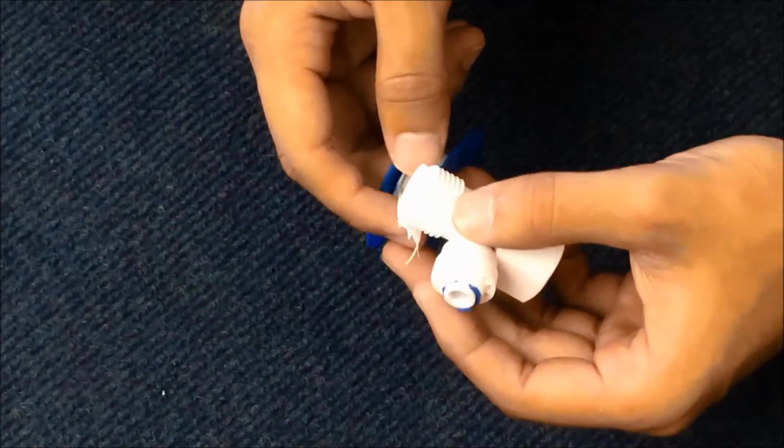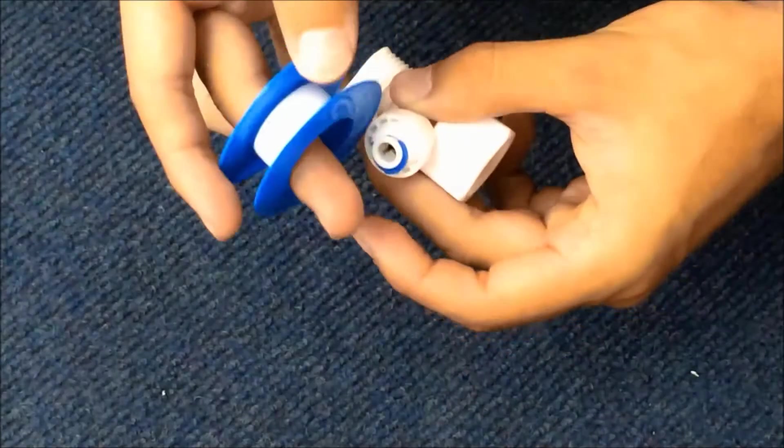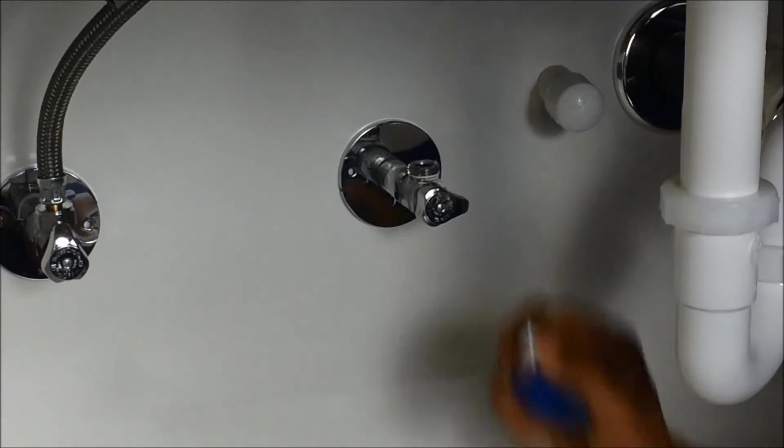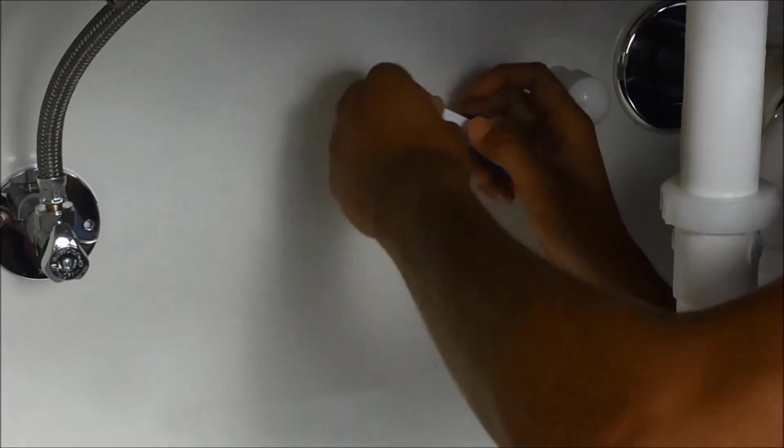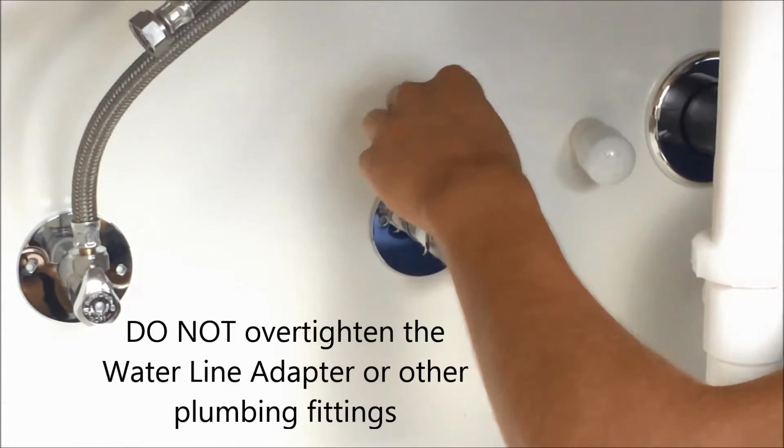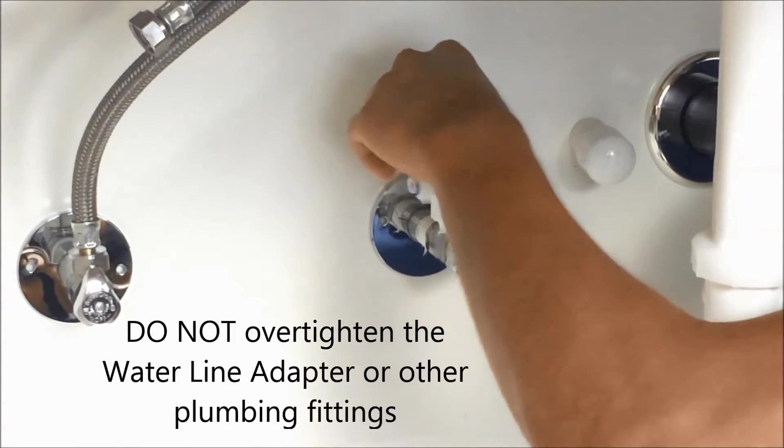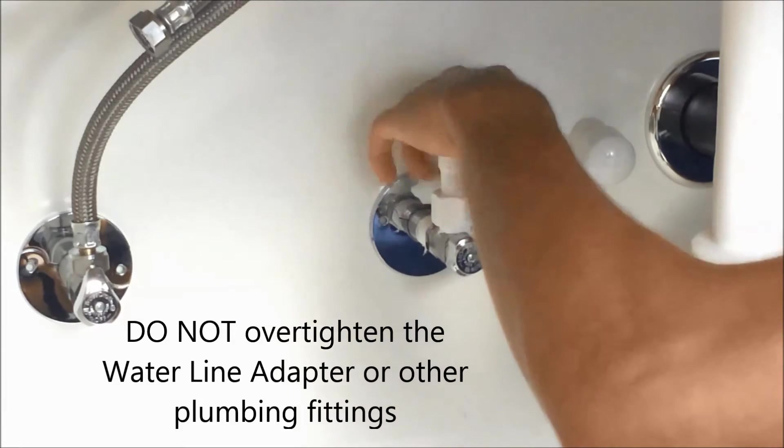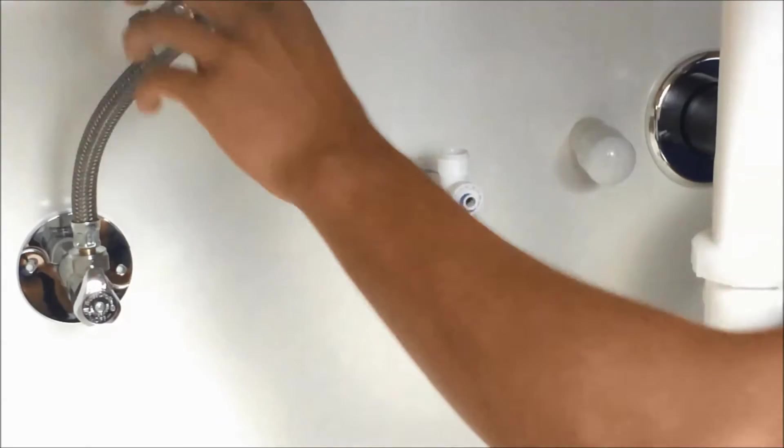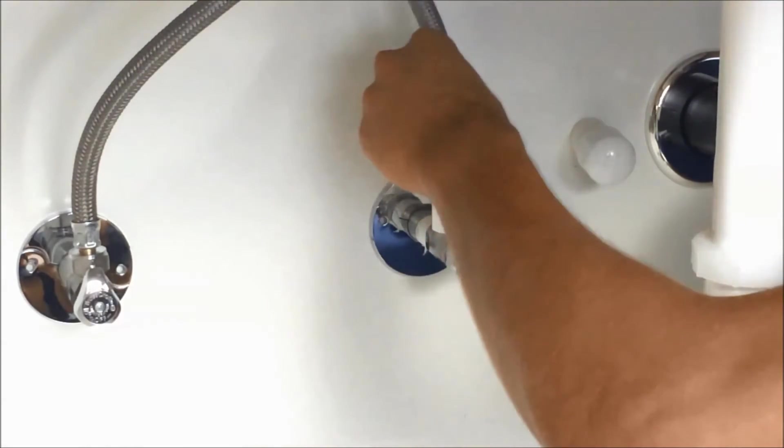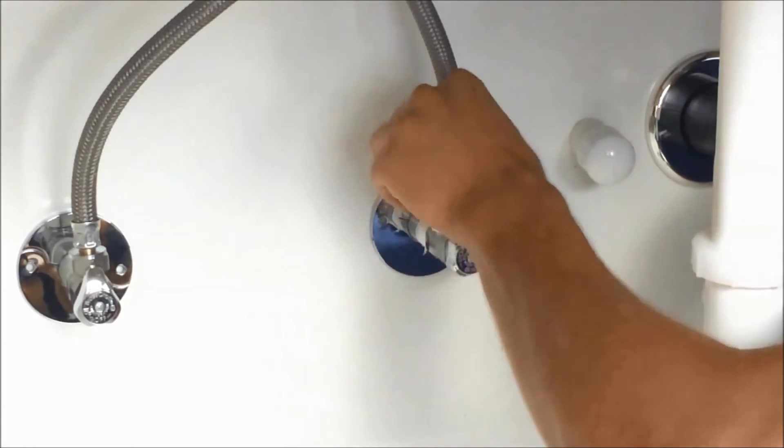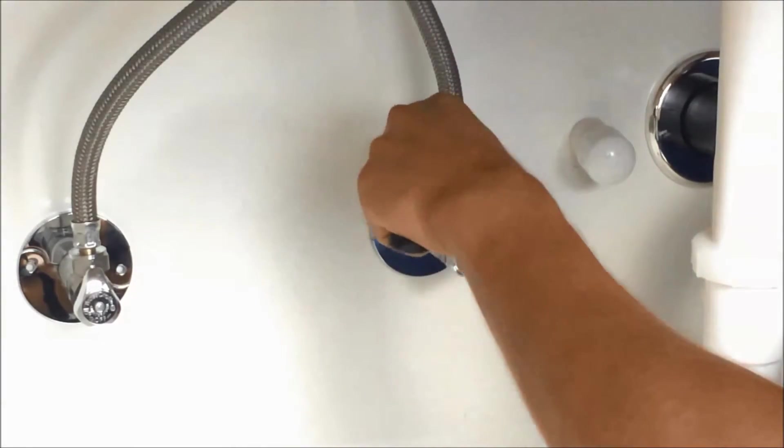It's important to wrap the threads of your adapter with Teflon tape. You'll also want to put some Teflon tape on the faucet as well. With the Teflon tape in place go ahead and screw on your adapter onto the faucet. Then you can take your waterline and screw that onto the adapter. Take your wrench and tighten that up.